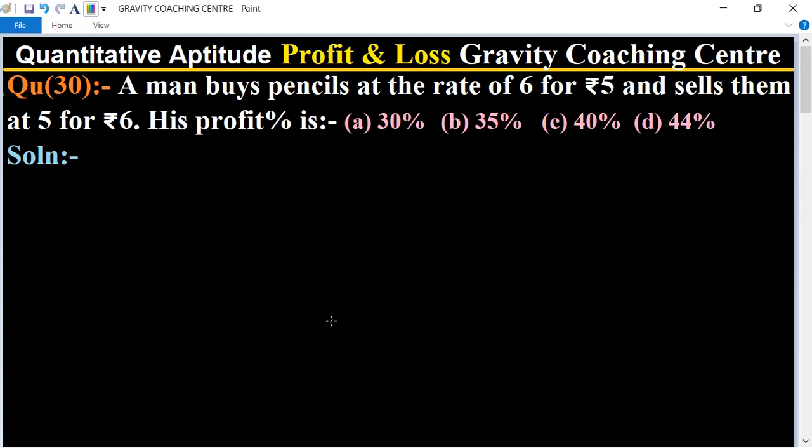Quantitative aptitude, chapter profit and loss, question number 30: A man buys pencils at the rate of 6 for ₹5 and sells them at 5 for ₹6. His profit percentage is?